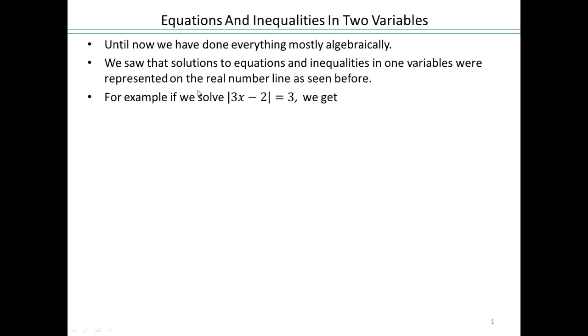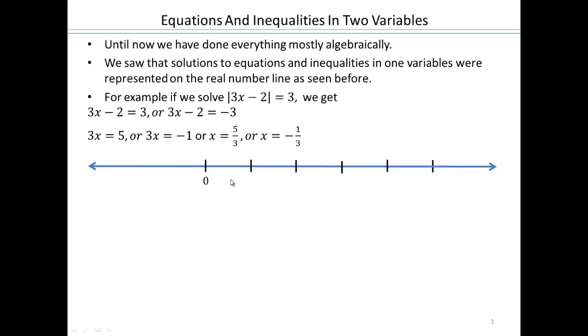For example, when we solved absolute value equations, we wrote them as 3x minus 2 is either 3 or negative 3, solved it for x, and ended up with x equals 5 thirds or x equals negative 1 third. These two solutions can be represented graphically on a number line. You already know how to do this, so this is just a quick review.